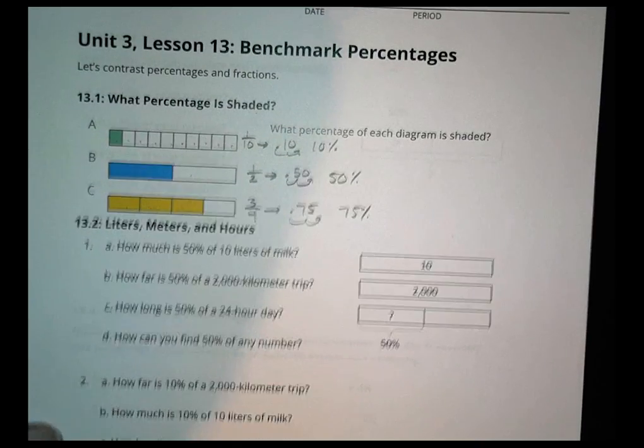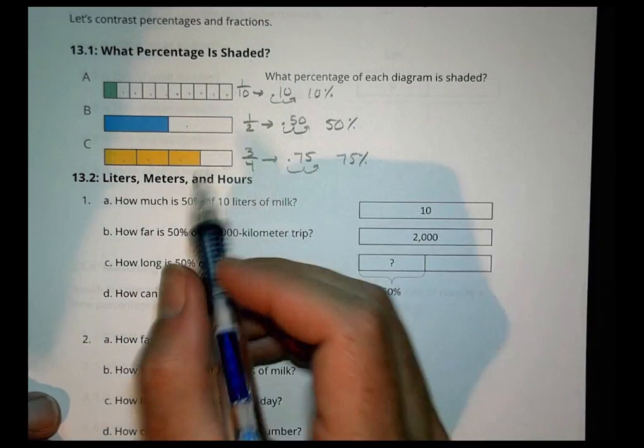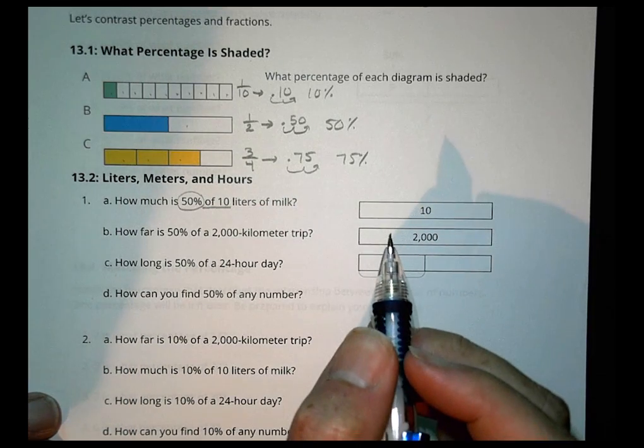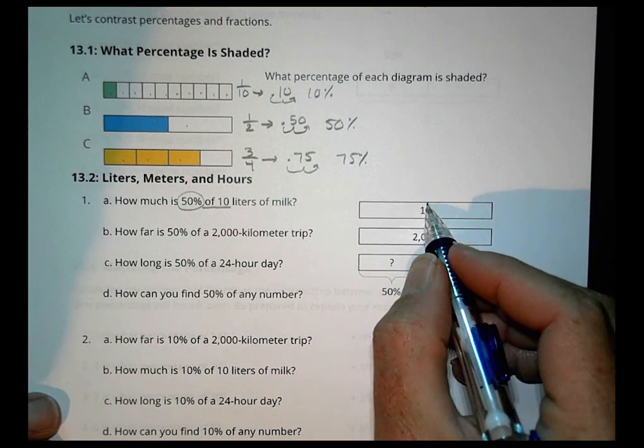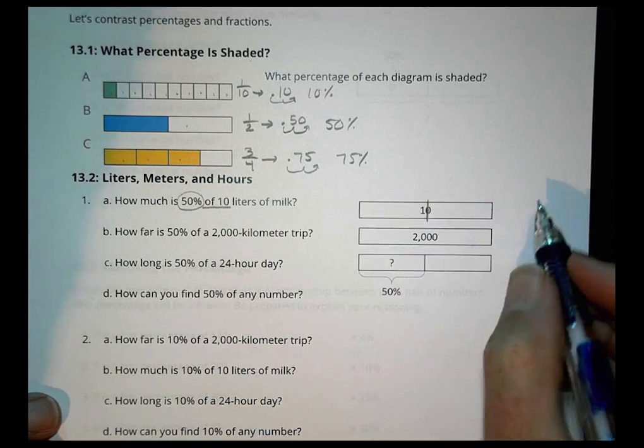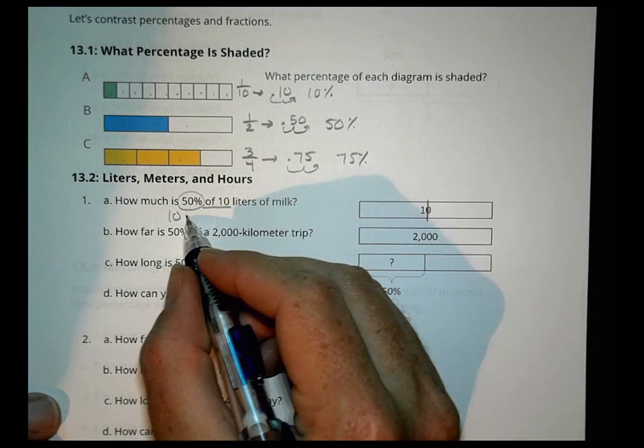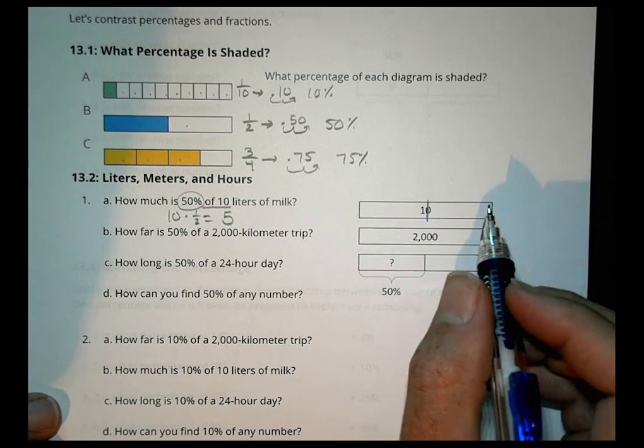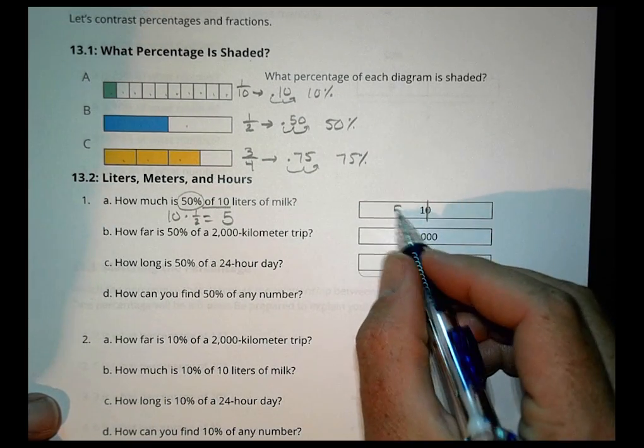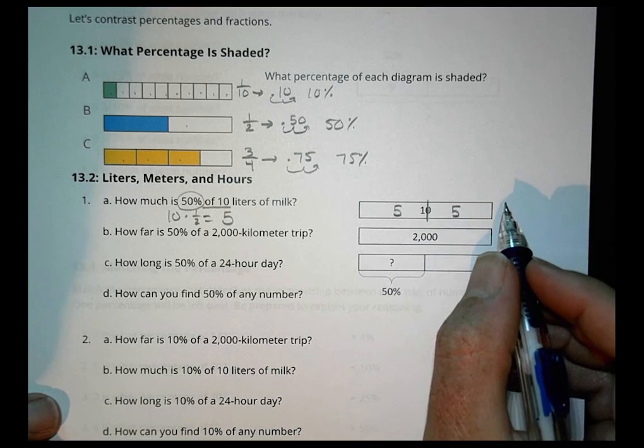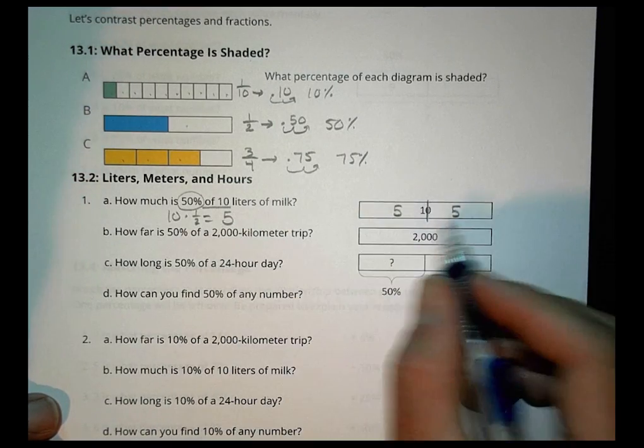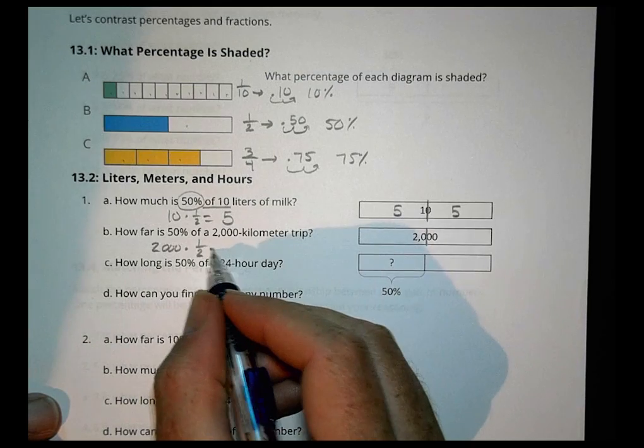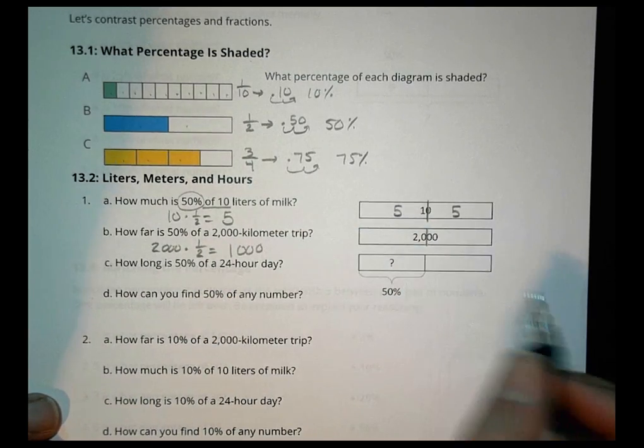Let's take a look then at the next activity. This is a quick little lesson today, so it shouldn't take us long. Liters, meters, hours - how much is 50% of 10 liters of milk? So it's like taking the 10, and 50% is cutting that in half. What is half of 10? 10 times a half, cutting it in half, becomes 5. So 50% of 10 liters is going to be 5 liters. When I do 50% of 2,000, again, I'm chopping that in half, and half of 2,000 is simply 1,000.